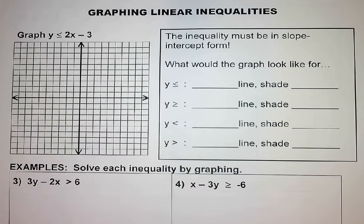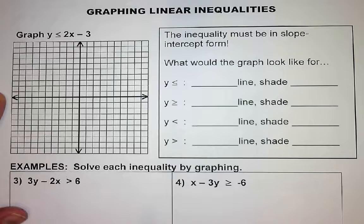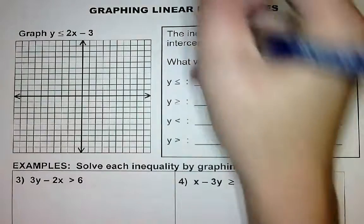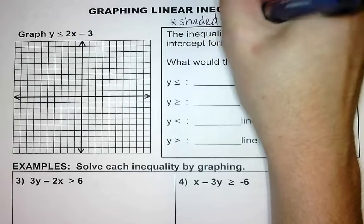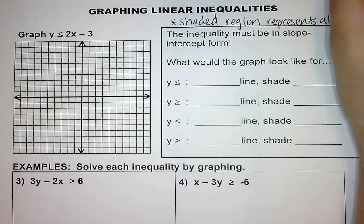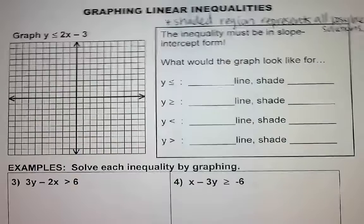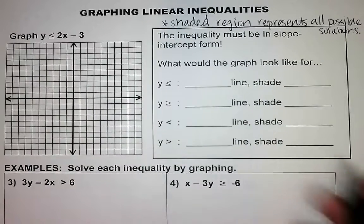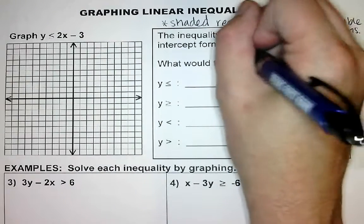When we are graphing linear inequalities, you graph it just like you would graph a linear equation, except you are going to shade your graph. The shaded region represents all your possible solutions. When you are identifying the shaded region, it's super important that it must be in slope-intercept form.